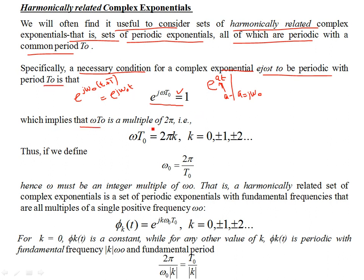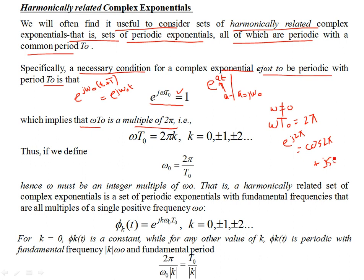This also implies that ωT0 can be a multiple of 2π. If you expand this using Euler's formula, e^(j2π) becomes cos(2π) + j·sin(2π). Since j·sin(2π) is 0 and cos(2π) is 1, this equals 1. So ωT0 should equal 2π, and that's how we construct the relationship between the time period and the rate of oscillation ω. They are inversely proportional: T0 = 2π/ω, which is the fundamental period, and ω is the fundamental frequency.